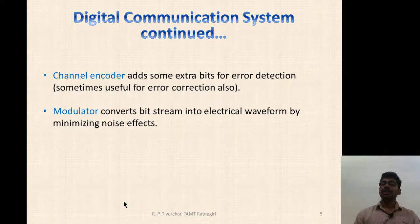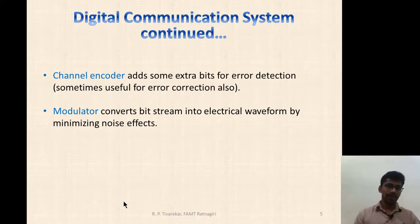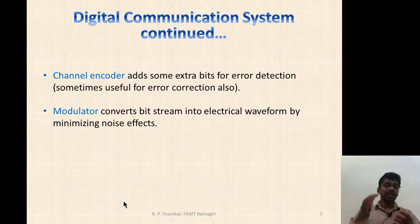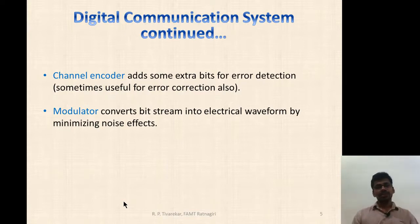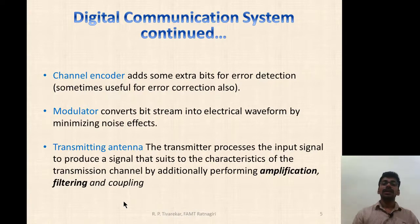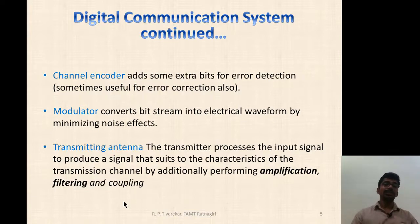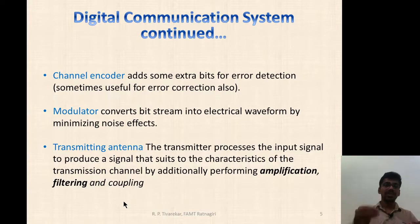The modulator converts the bit stream into an equivalent electrical waveform by minimizing noise effects. We already know the function of a modulator in analog communication — it reduces antenna height and makes multiplexing possible. In the analog domain, the modulator also reduces bandwidth. Here we will also be using a modulator. The transmitting antenna block performs additional amplification, filtering and coupling, and the transmitter processes the final input to produce the signal best suited for the communication channel.